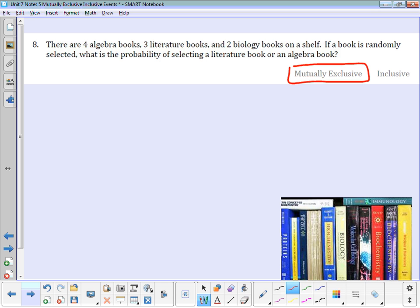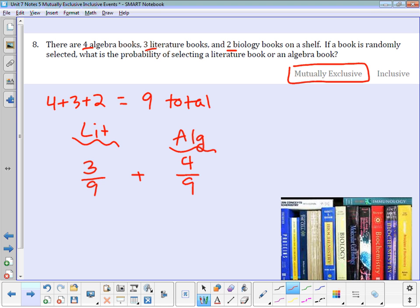Since they are mutually exclusive, I just need to look at my two probabilities and add them together. There's four plus three plus two books, that's nine books total. The probability of selecting a lit book would be 3 out of 9. The probability of selecting an algebra book would be 4 out of 9. These are mutually exclusive, nothing is in both categories. So I just add them together. 3 out of 9 plus 4 out of 9 is 7 ninths.